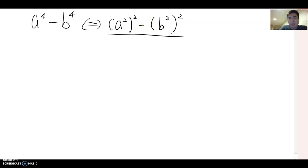So this is same as a square minus b square form. Then we can factor it. So what is it going to be? This becomes a square minus b square and then a square plus b square.